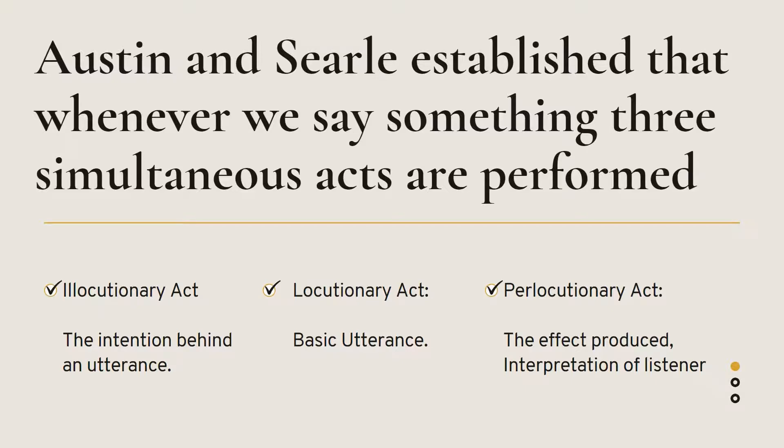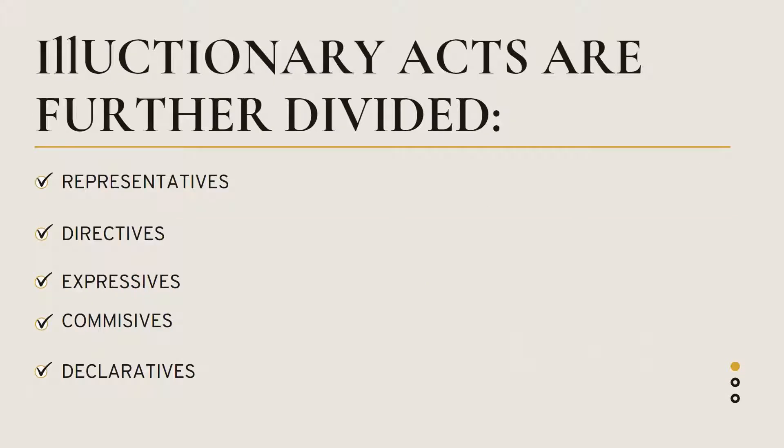So there are three acts: the illocutionary act is the intention behind an utterance, the locutionary act is the concrete utterance itself, and the perlocutionary act is the interpretation of the listener or the effect produced on the listener. The illocutionary act is further divided into the following types.